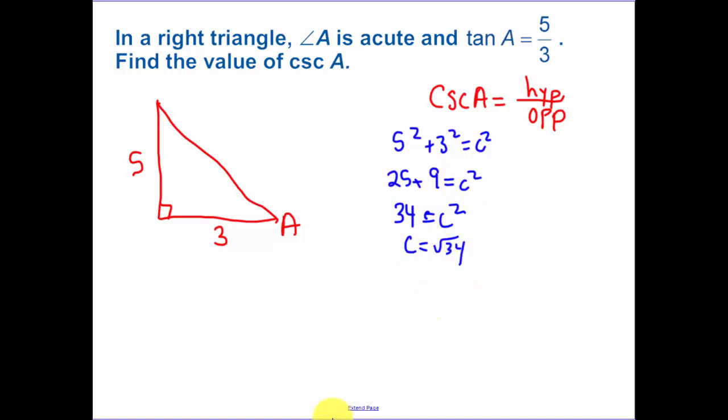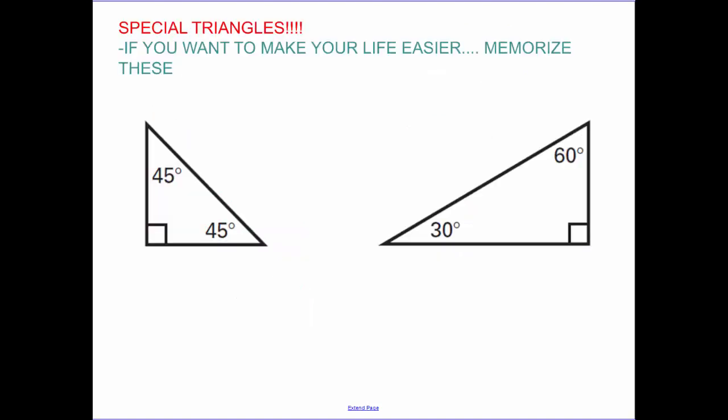So I'm looking for cosecant, which is hypotenuse, which is root 34—I just solved for that using our Pythagorean theorem—over the opposite side, which is 5.